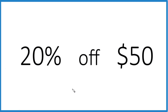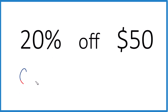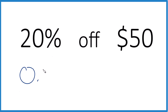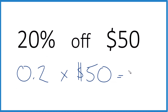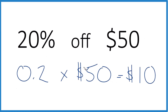20% is 20 over 100, which is just 0.2. So we multiply that times $50, and 0.2 times 50 equals $10. That's the math way.